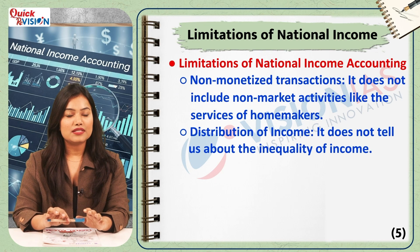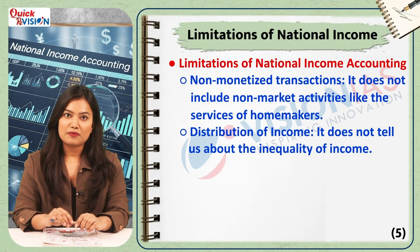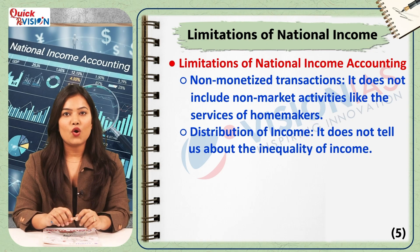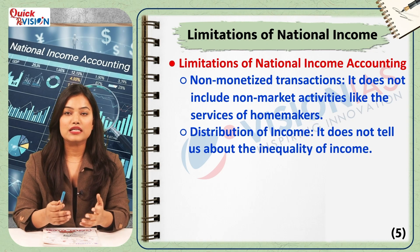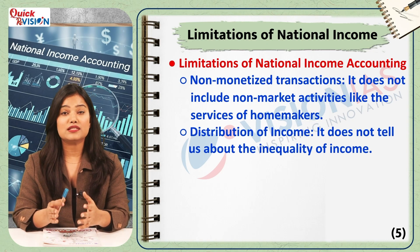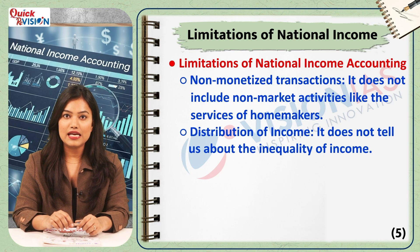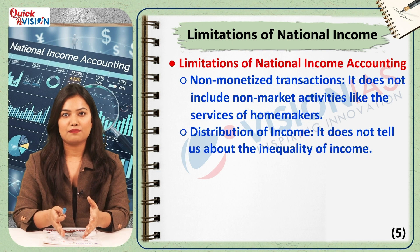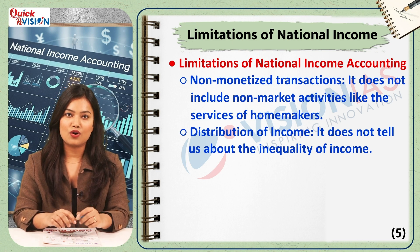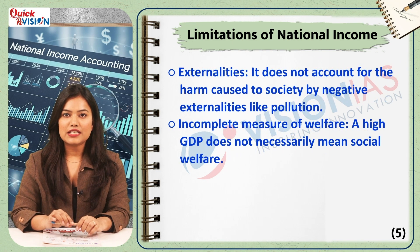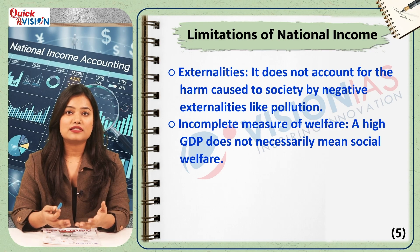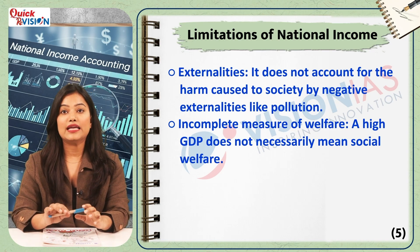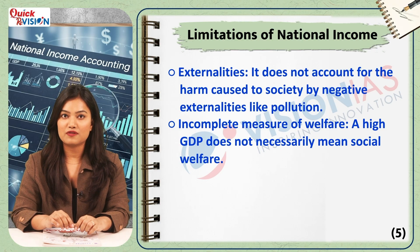Although national income is an important indicator of economic performance, it has some limitations. It does not include the non-monetized sector of the economy, such as the work done by a homemaker. It does not reflect the inequality in the distribution of income — it's possible for GDP to be rising while the gap between the rich and the poor is also increasing. It also doesn't account for negative externalities like environmental damage or pollution. Therefore, it is important to remember that a high GDP does not always mean high social welfare.